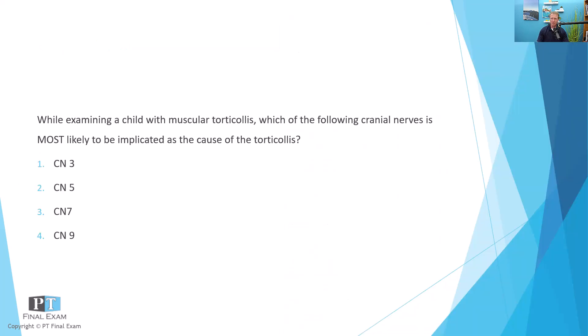While examining a child with muscular torticollis, which of the following cranial nerves is most likely to be implicated as the cause of the torticollis? The answer options are cranial nerve three, five, seven, or nine.